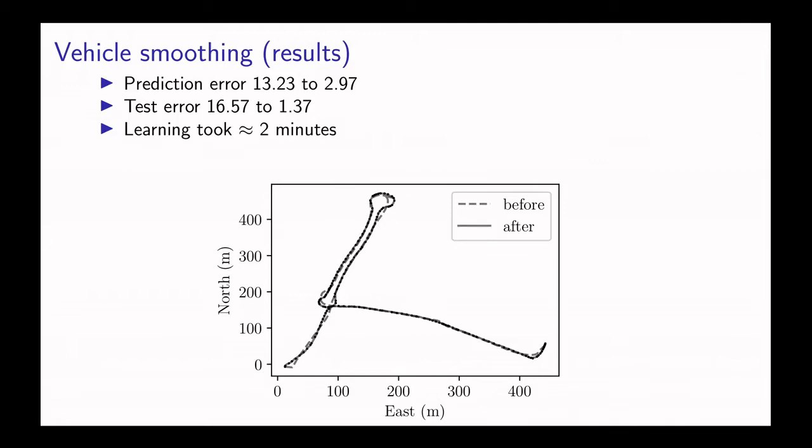Learning the parameters took around two minutes. Here we show the position trace of the imputed state sequence before and after learning. As you can see, after learning it seems to match, it seems much more realistic than before. You can see we're recovering some really good parameters to use for the smoother.